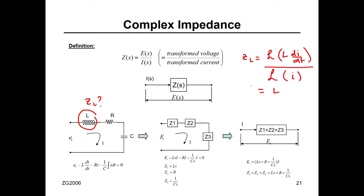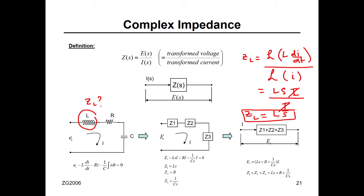The Laplace transform of I in the time domain is capital I in the S domain. So we have L·S·I over I. The I cancels, and you're left with L·S. So Z for any inductance is simply L·S — the inductance constant times the complex variable S.